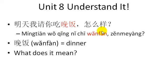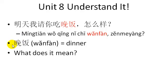Baiying Ai responds: 明天我请你吃晚饭，怎么样? You already know 饭, but 晚 is new — it means 'evening.' 晚饭 is the word for dinner. So you can separate them: 晚 means evening, 饭 means rice or meal, and 晚饭 means dinner. The full sentence is: 'Tomorrow I'll treat you to dinner — how about it?'